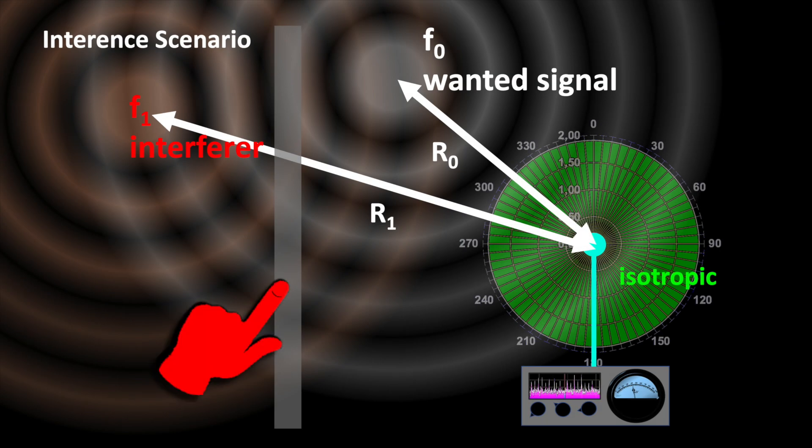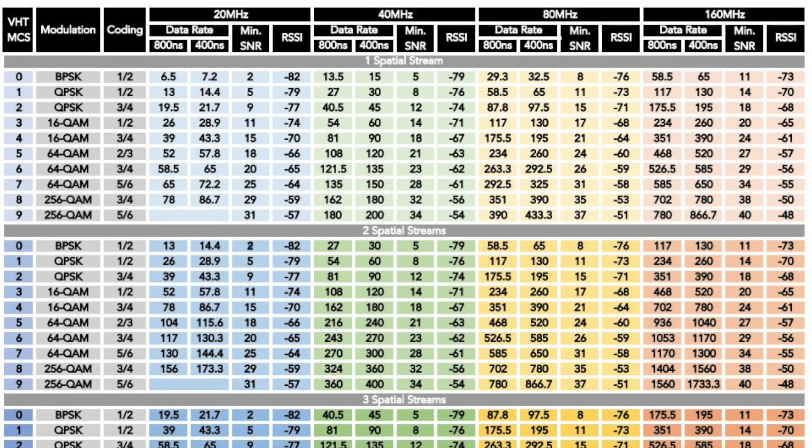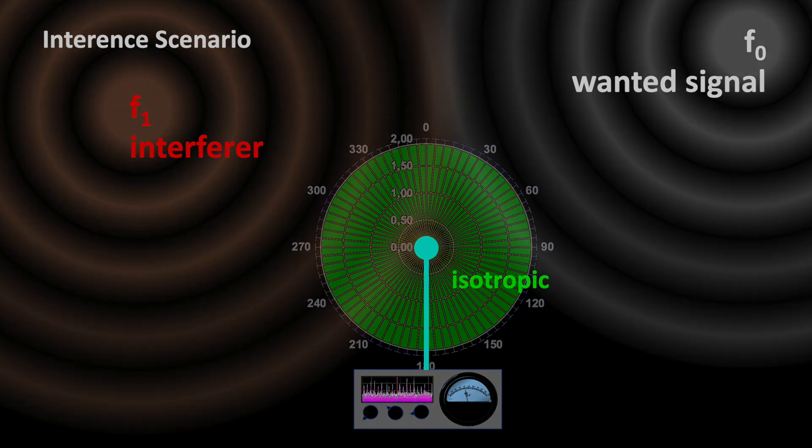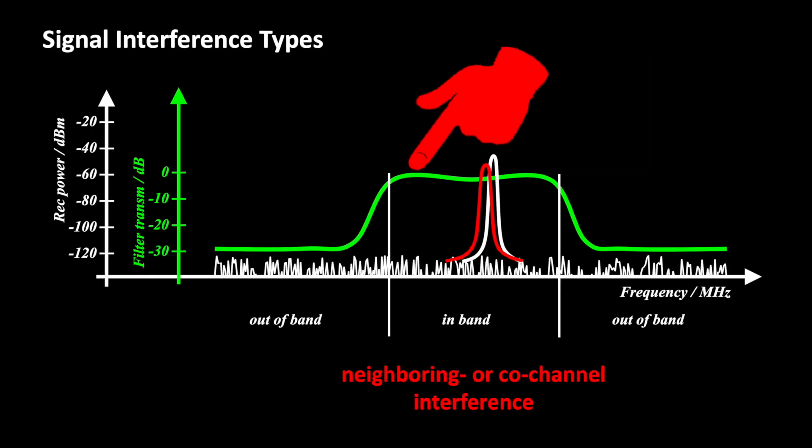A wall attenuating interfering signals by 10 dB has a similar effect to increasing the distance. Theoretically, you could operate Wi-Fi networks in adjacent rooms on the same frequency. However, it is not recommended since for higher data rates a significantly better SNR is required. You can change the frequency if a channel is interfered and Wi-Fi routers can even do that automatically.